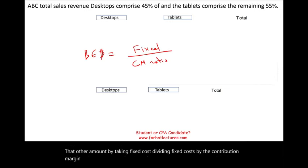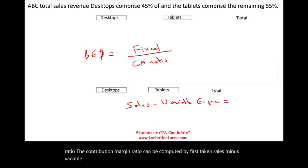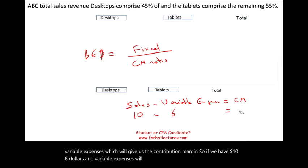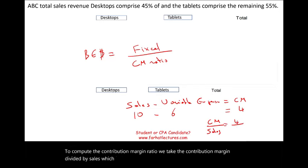Now you need to know how to compute the contribution margin ratio. It can be computed by first taking sales minus variable expenses, which gives us the contribution margin. So if we have ten dollars minus six dollars in variable expenses, we get a contribution margin of four. Then we take the contribution margin divided by sales — four dollars divided by ten dollars — giving us a contribution margin ratio of 40 percent.